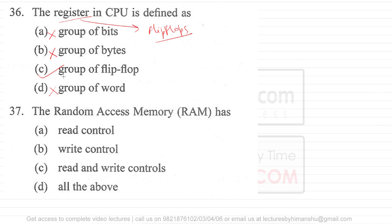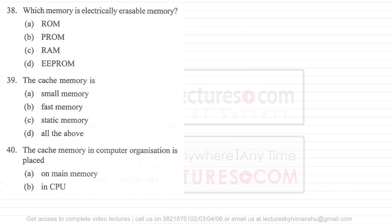Question 37: RAM has read control, write control, and read-and-write control. The answer should be all of the above, but option C includes both read and write. The question is not well formulated. Question 38 asks which memory is electrically erasable — the answer is EEPROM, which is the electrically erasable memory.